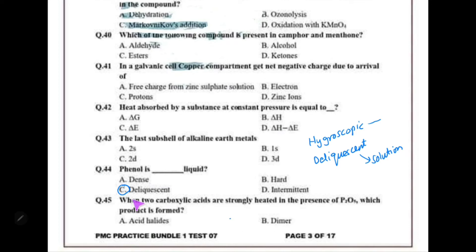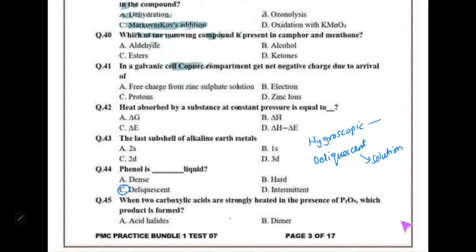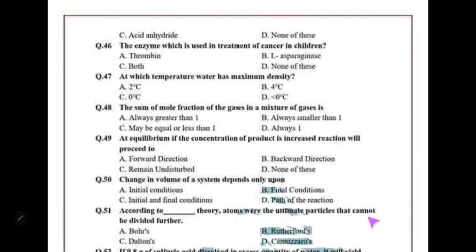When two carboxylic acids are strongly heated in the presence of P₂O₅, which product is formed? Acid anhydrides are formed. Two acids react together and in the presence of P₂O₅ they form an acid anhydride.